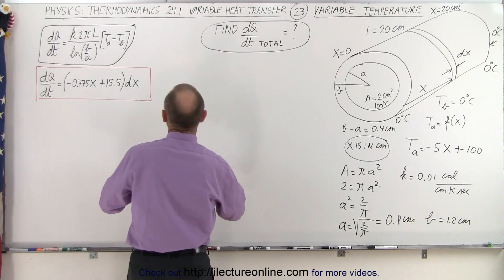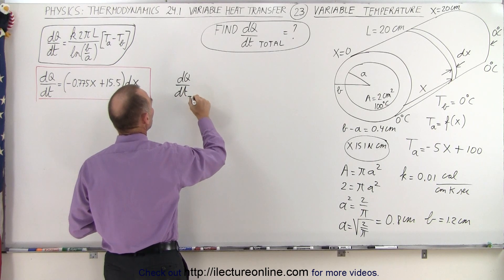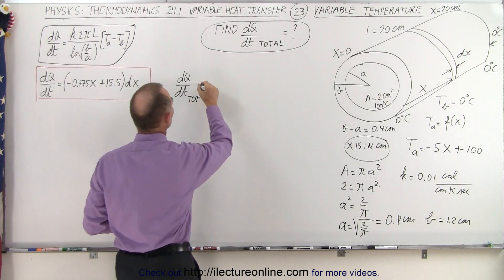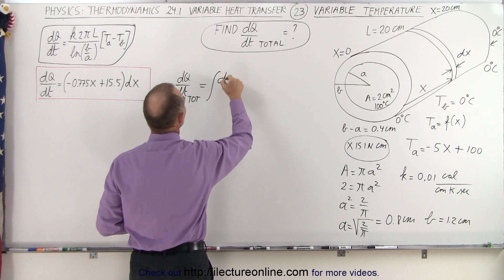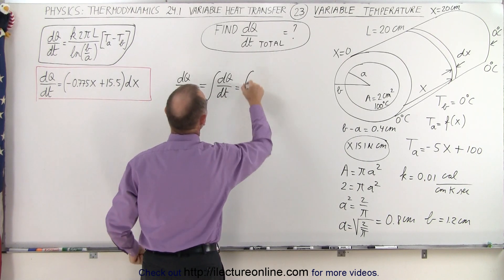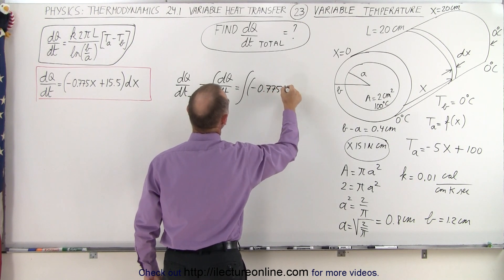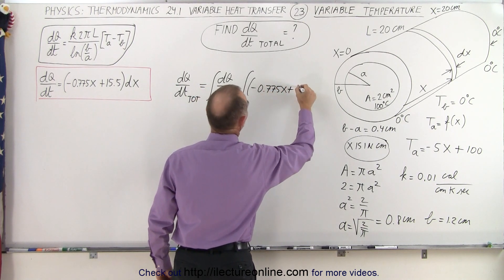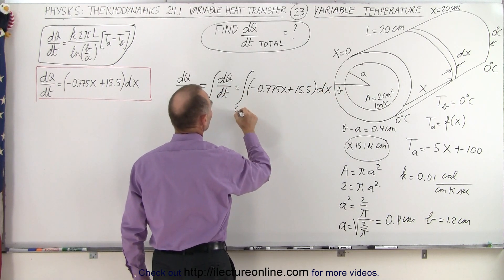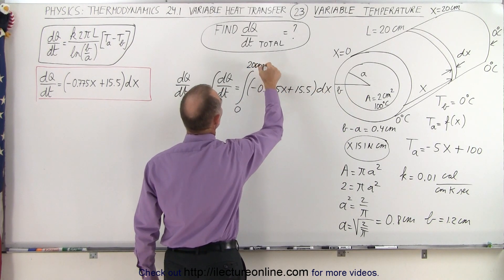So what we're going to do now is say that the dQ/dt total, the total amount of heat transfer from the inside towards the outside, is going to be the integral of the dQ/dt that we found here in the previous video, which is going to be equal to the integral of minus 0.775x plus 15.5 times dx, and we're going to integrate from x equals 0 to x equals 20 centimeters.